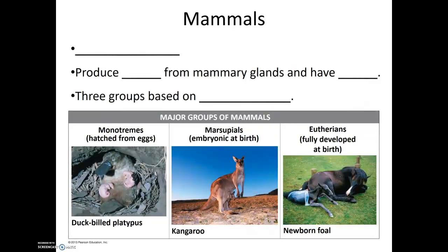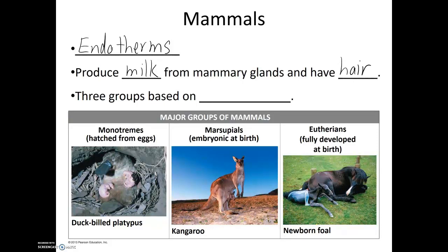The final group of animals that we'll talk about are the mammals. Like birds, mammals are endotherms, or warm-blooded. Other hallmarks of mammals include milk, which is produced from mammary glands for their young, and also hair. The three groups of mammals are the monotremes, marsupials, and eutherians.